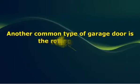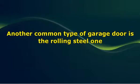Another common type of garage door is the rolling steel one. Such a door is made from corrugations that allow it to roll up smoothly. They are better than sectional doors because they are more resistant to shocks of all kinds.